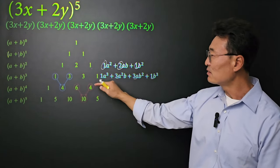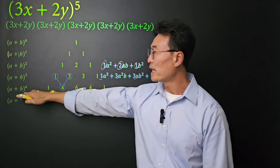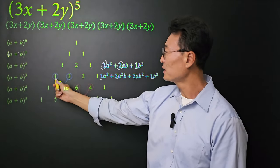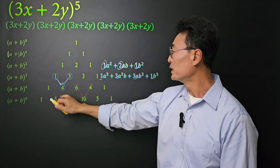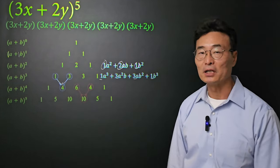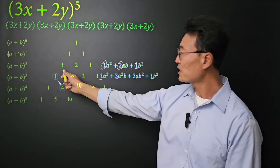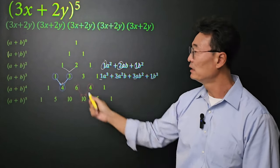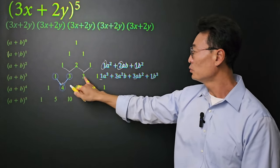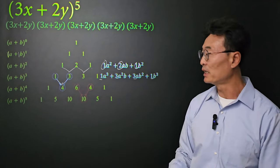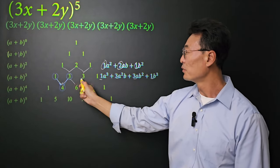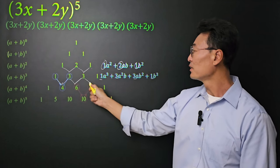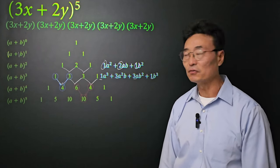Instead of multiplying out (a + b) to the fourth power, here's what we do. We take the 1 and the 3 and add them to get 4. Just like up here, where we added 1 and 2 to get 3, and added 2 and 1 to get 3 again. Notice here: 3 plus 3 gives us 6, and 3 plus 1 gives us 4.